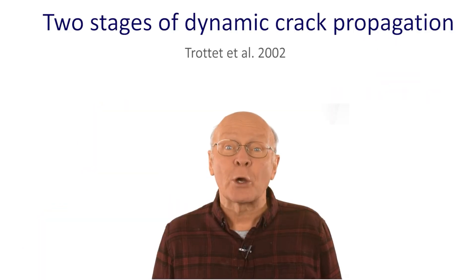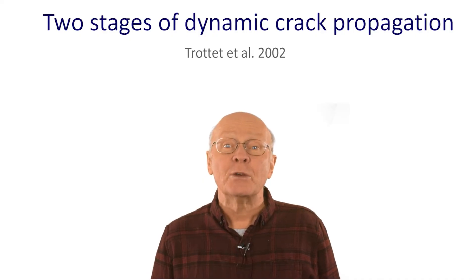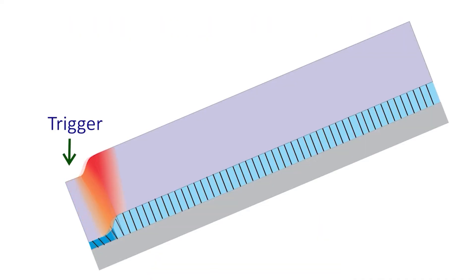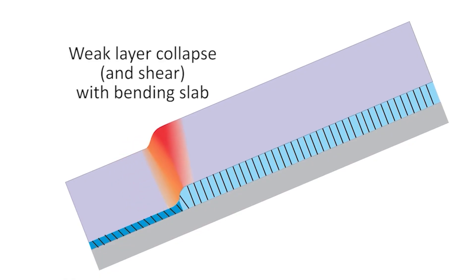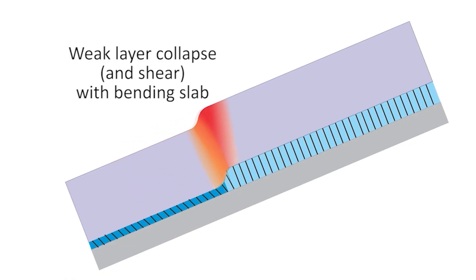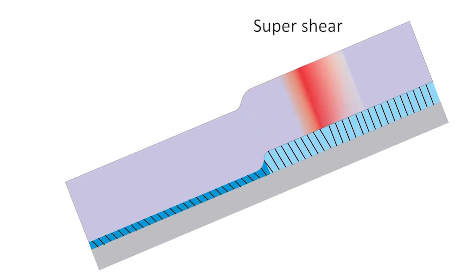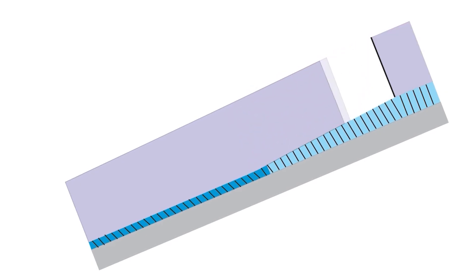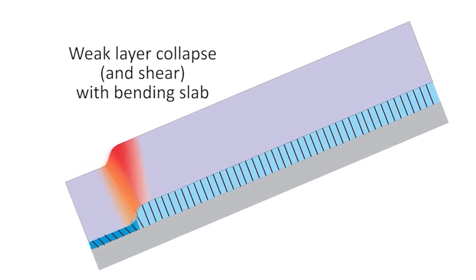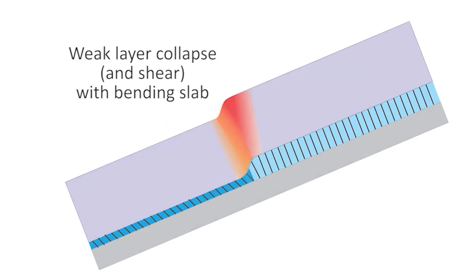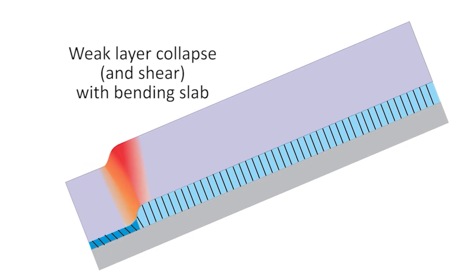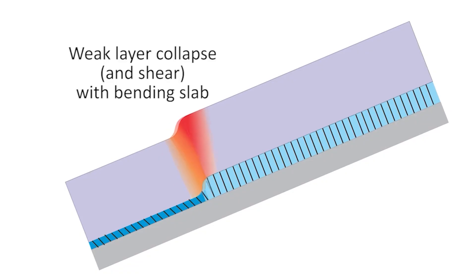Recent research by Joanne Gome and colleagues has shown that there are two stages to dynamic crack propagation. The first stage involves substantial collapse in the weak layer, which is driven by a bending wave in the slab. In the second stage, called super shear, tension in the slab drives shear crack propagation in the weak layer. This animation only shows propagation upward from the trigger point. In the first stage, the bending wave and collapsing crack usually propagate at 15 to 45 meters per second. This is what we see in the first 10 or so meters away from the trigger point, and also in snowpack instability tests.